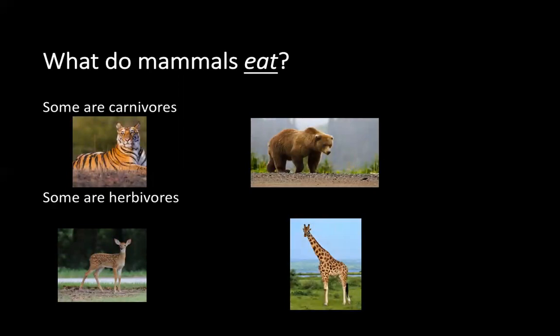What do mammals eat? Some mammals are carnivores and some mammals are herbivores. Do you remember what both of those words mean? Pause the video and write down your answer in your notebook. If you said a carnivore eats meat and an herbivore eats plants, you're correct. Give yourself a pat on the back.